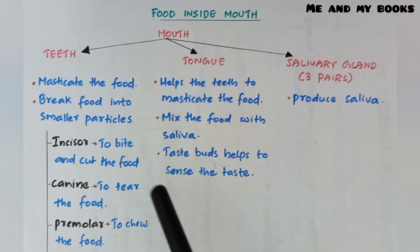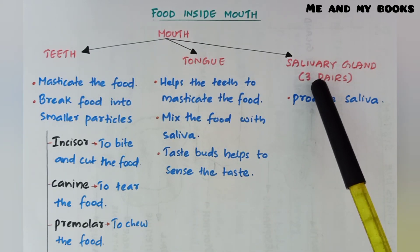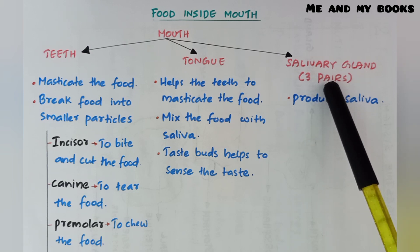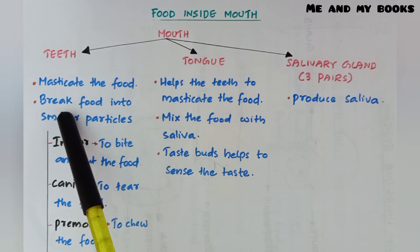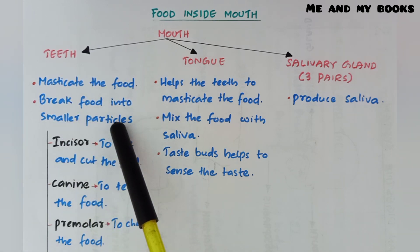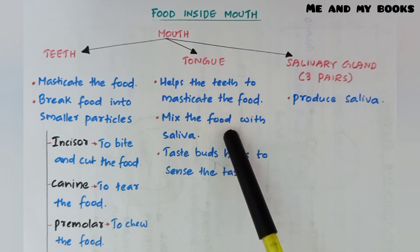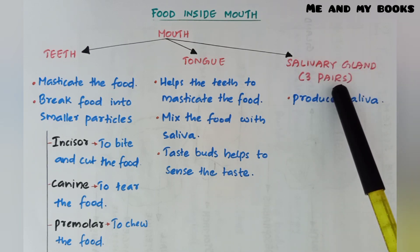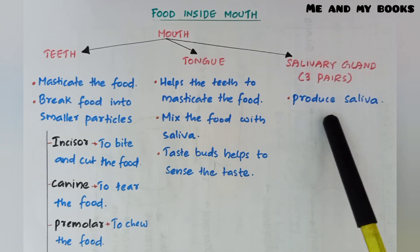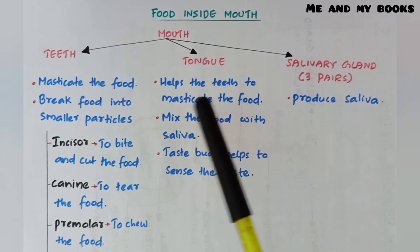What happens to food when it reaches inside the mouth? In the mouth we can see teeth, tongue, and salivary glands — three pairs. The function of teeth is to masticate the food, meaning to chew and break it into smaller particles. The tongue helps the teeth masticate the food and mixes the food with saliva. Taste buds help us sense taste. Salivary glands produce saliva, which contains enzymes that help in digestion.